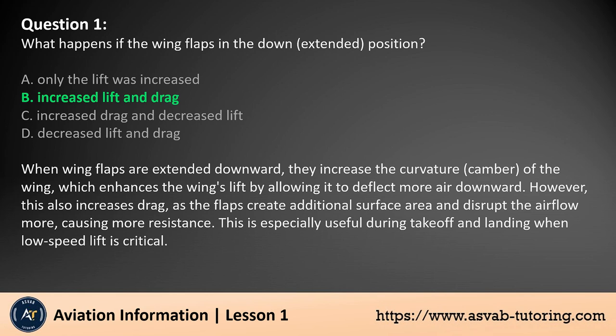The answer is B. When wing flaps are extended downward, they increase the curvature of the wing, which enhances the wing's lift by allowing it to deflect more air downward. However, this also increases drag, as the flaps create additional surface area and disrupt the airflow more, causing more resistance. This is especially useful during takeoff and landing when low-speed lift is critical.